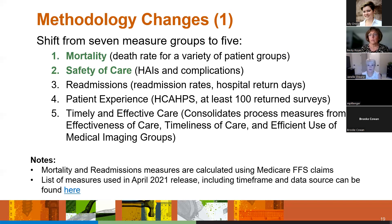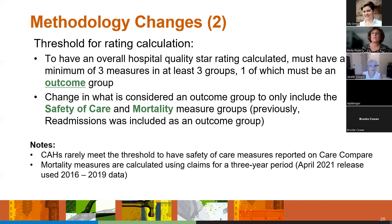The recent July 2022 changes reduced measure groups from seven to five: mortality (seven measures), safety of care — which includes HAIs like CAUTI and CLABSIs (eight measures), readmissions (11 measures), patient experience from HCAHPS (eight measures), and timely and effective care (12 measures), totaling 46 measures. For an overall hospital star rating, you must have a minimum of three measures in at least three groups, and one of those must be an outcome measure like safety of care or mortality. Many critical access hospitals are excluded because they don't meet thresholds — for example, you'd rarely have 100 central line infections in four quarters.